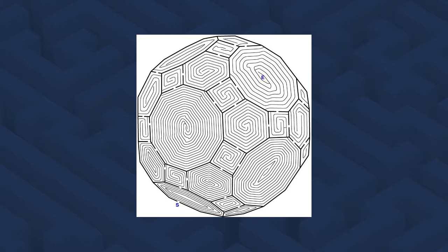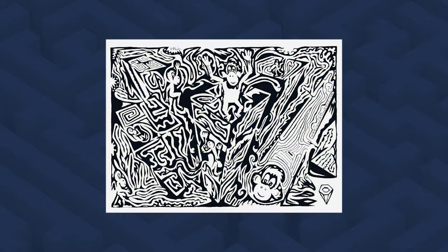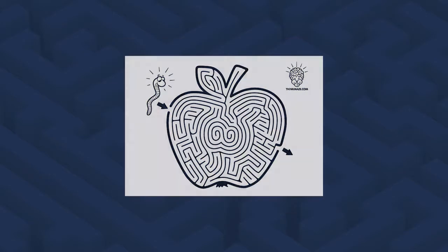They can be simple square grids, or take just about any shape the designer wishes, and vary in complexity to provide different levels of challenge. Countless applications can be seen in our modern world. They can be seen in children's activity books, on the back of cereal boxes, and on restaurant placemats.